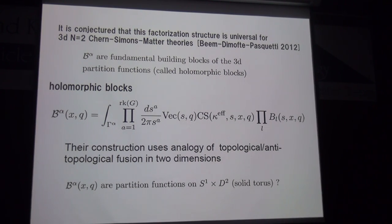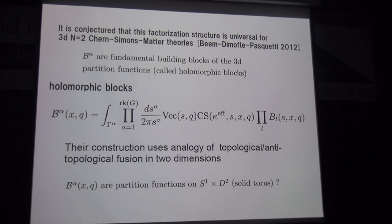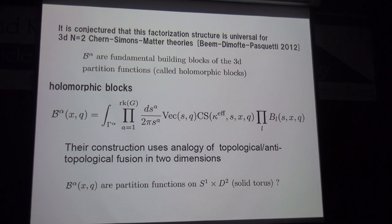I cannot explain the technical detail of the derivation of this holomorphic block, because the paper is almost 120 pages and about 15 pages are devoted to deriving this rule. Roughly speaking, you can use an analogy of topological–antitopological fusion in two dimensions. From this analogy, we expect that B_α is the partition function realized on S¹ × hemisphere, which has the same topology as the three-dimensional solid torus.